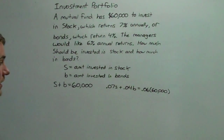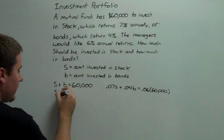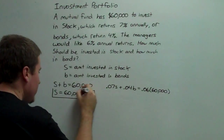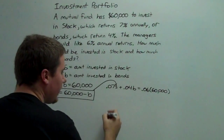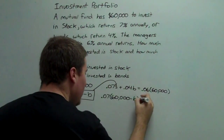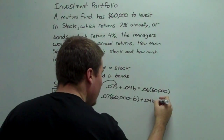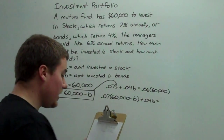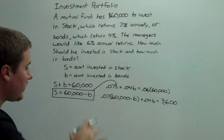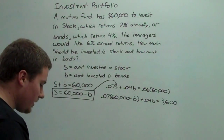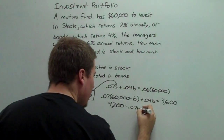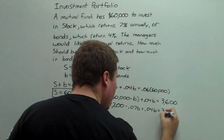It's really your choice as to which variable you want to solve for. Let's go for S: S equals 60,000 minus B. We drop that into the returns equation, so we have 0.07 times (60,000 minus B) plus 0.04B equals 0.06 times 60,000, which is 3,600. Multiplying out: 4,200 minus 0.07B plus 0.04B equals 3,600.